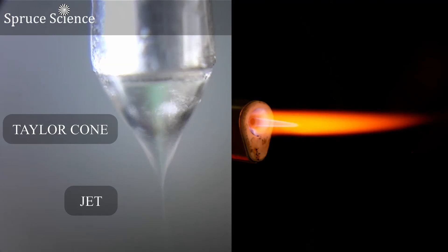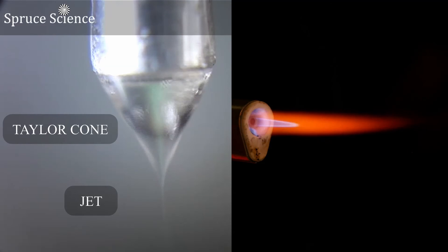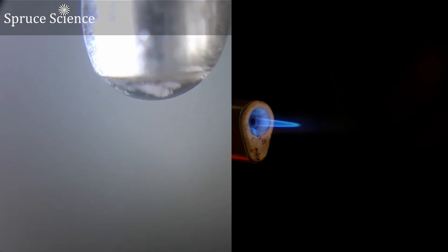That Taylor cone is then pulled into a jet. From there, the jet is further disrupted into a series of tiny droplets. You get this characteristic formation when high voltage is balanced with pumping rate.